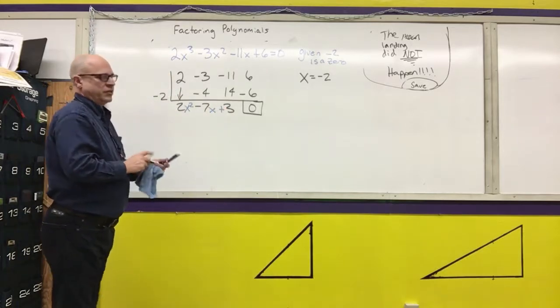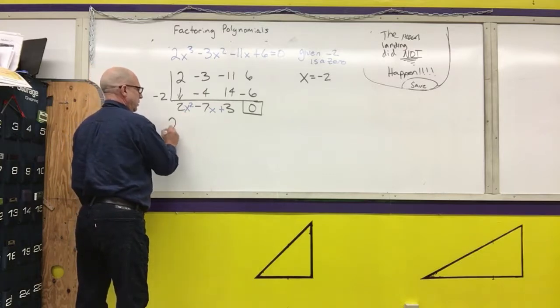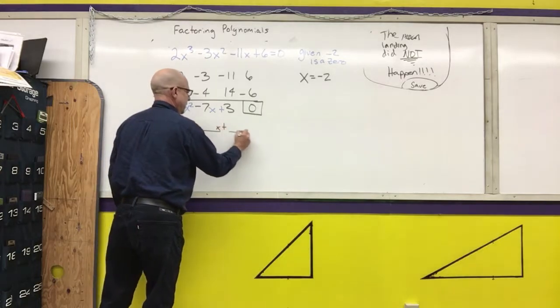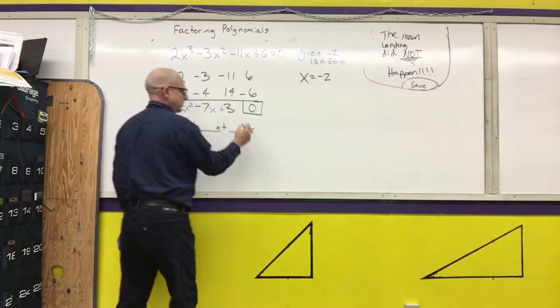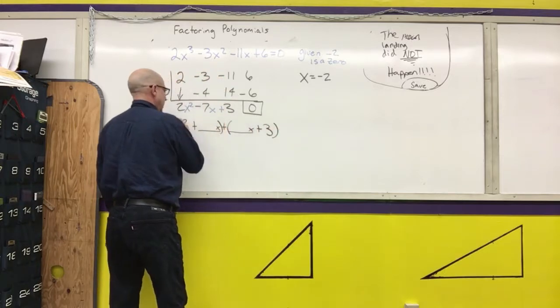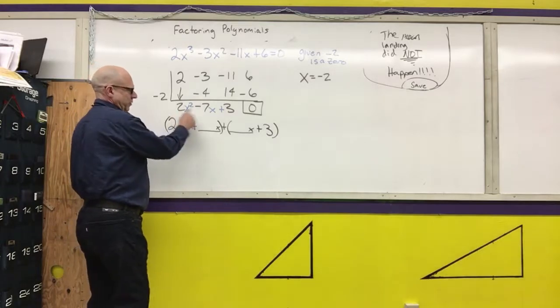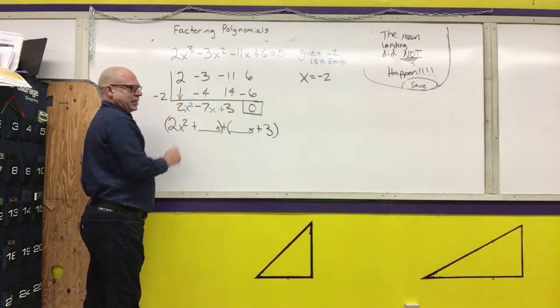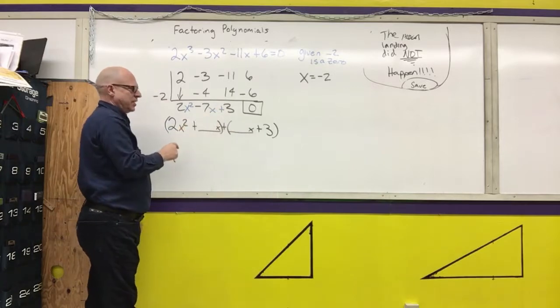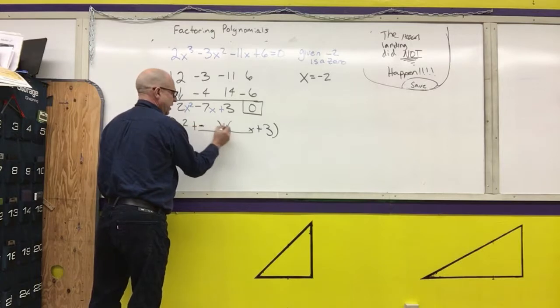I'm going to factor this one by grouping. Copy the first term. Put plus blank x plus blank x. Copy the last term. Parentheses around the first two terms and the last two terms with a plus sign in between. Multiply the first and last numbers together, and that gives me a 6. I need two numbers that multiply to 6 that add to negative 7. They're both going to have the same sign, which is negative.